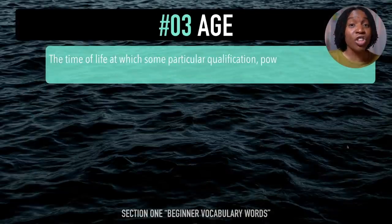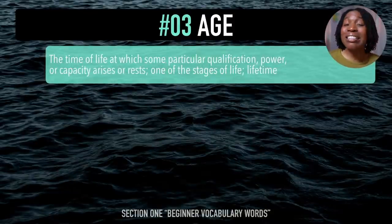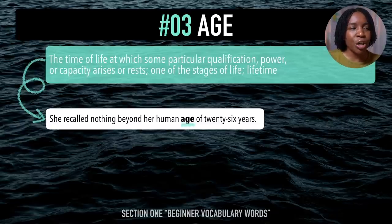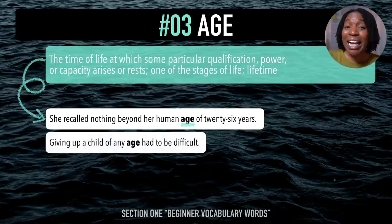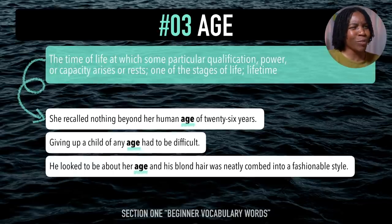The next beginner vocabulary word using the 'juh' sound is 'age'. After me — age. This refers to the time of life at which some particular qualification, power, or capacity arises, or one of the stages of life. Example sentences: She recalled nothing beyond her human age of 26 years. Giving up a child of any age had to be difficult. He looked to be about her age and his blonde hair was neatly combed into a fashionable style. Last time — age.